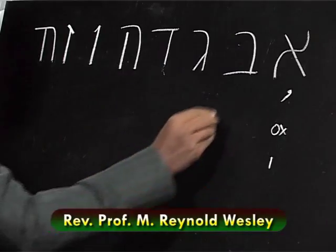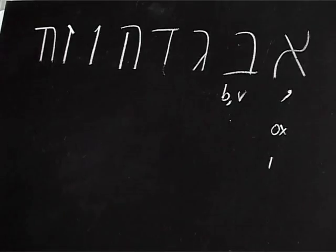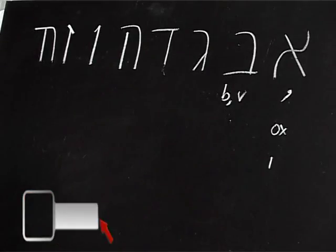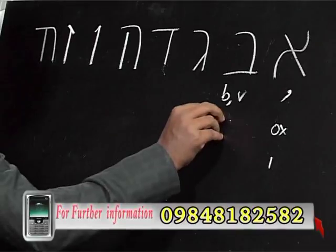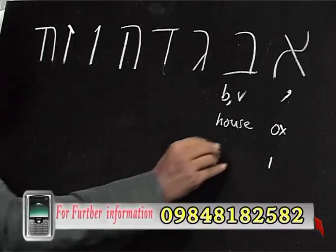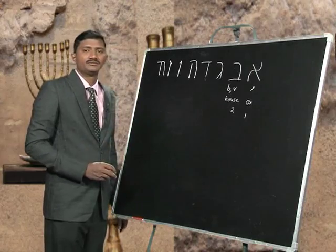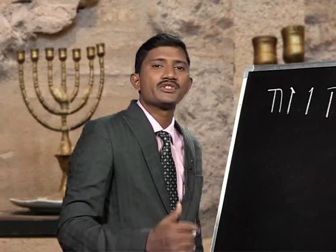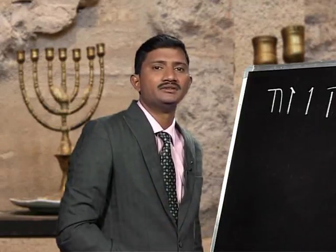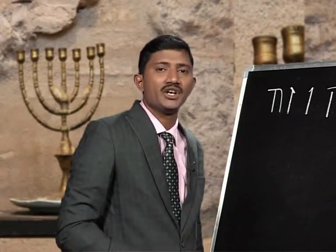The second letter, Beith, represents the sound B or V. The meaning we get from it is 'house,' and the numerical value is number 2. It points to our Lord Jesus Christ, because He is the second person in the Godhead — the second person in the Trinity of God.